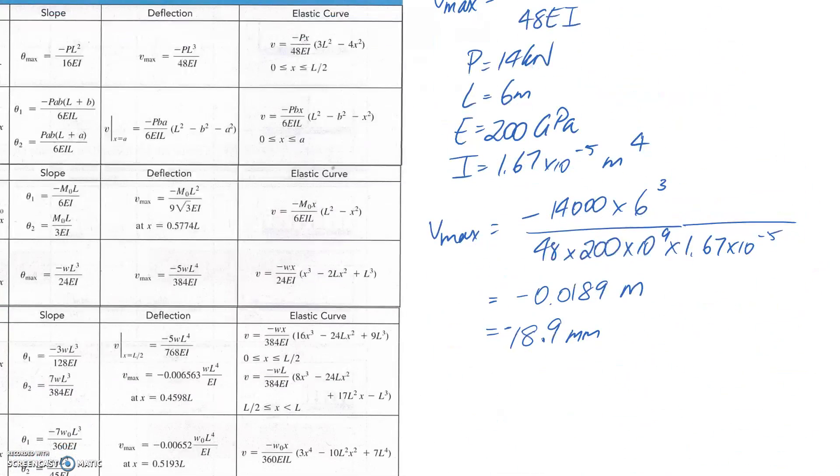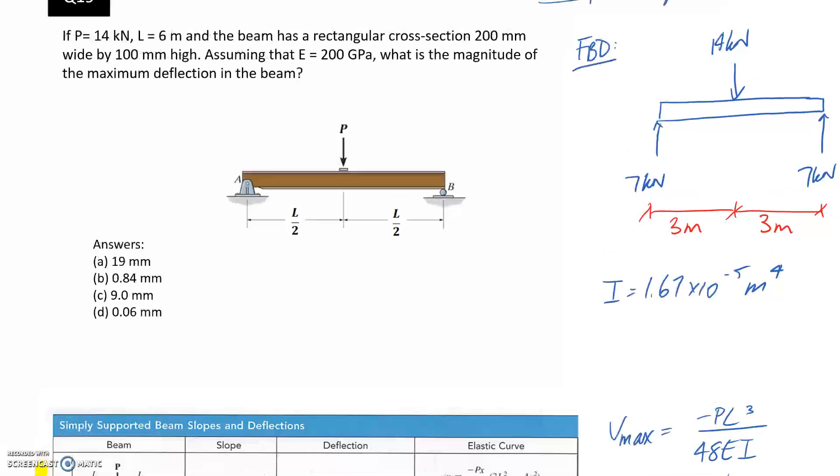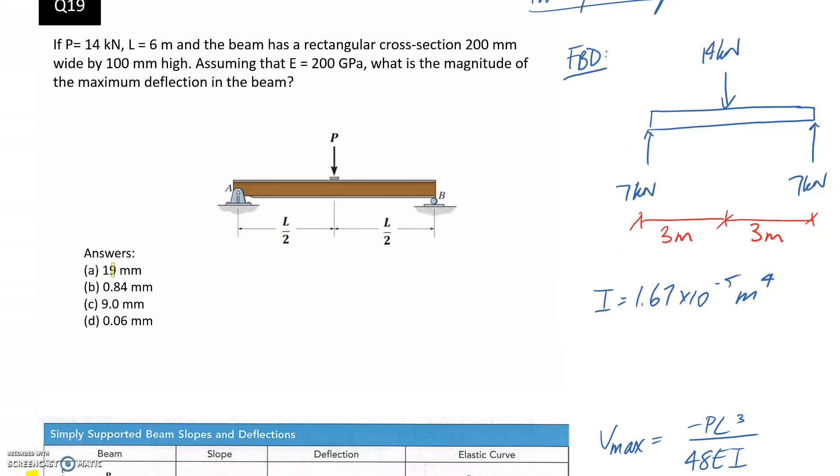So if we've got 18.9 millimetres as our deflection, if we look back at our answers, one of them is 19. So that's going to be the answer we need for the question.